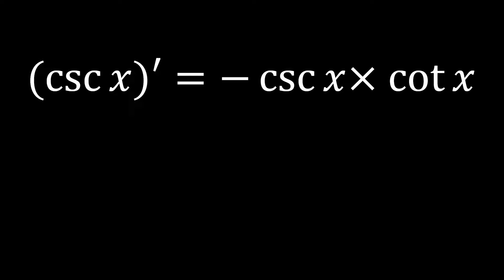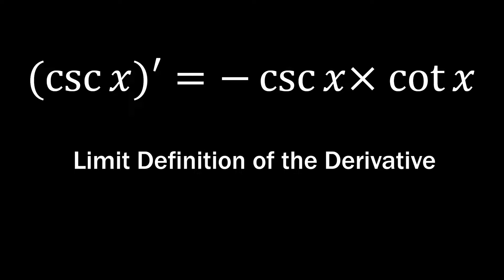In today's video, we'll prove why the derivative of cosecant x equals negative cosecant x times cotangent x using the limit definition of derivative, also known as the first principle.